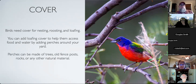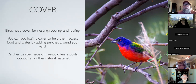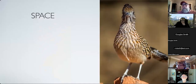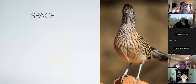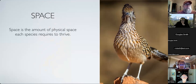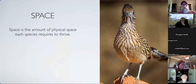Perches can be made of trees, old fence posts, rocks, or any other natural material. This roadrunner was on rocks at my water hole - I'd put out rocks and birds always like to get to the high ground, so any rock that was a little bit higher than the rest they'd sit up on while they're hanging out and resting, waiting to go get another drink.